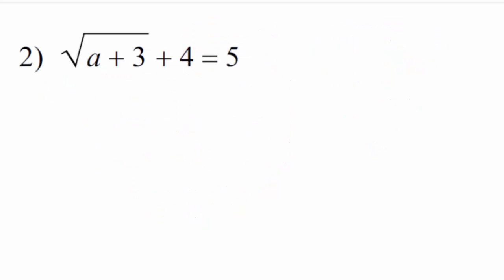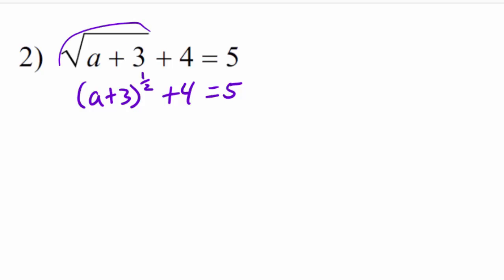For this problem I'm going to write it with a half power: (a+3) to the one-half power plus 4 equals 5. Even if you see a one-half power, that's still a square root equation. So we're still going to isolate that first — subtract 4 from both sides — and end up with (a+3) to the one-half equals 1.